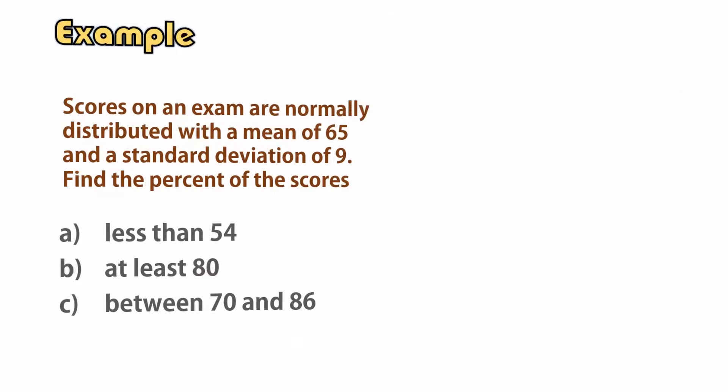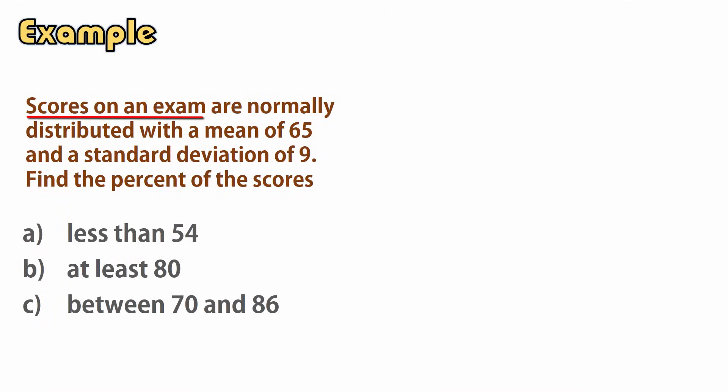Let's look at an example. Scores on an exam are normally distributed with a mean of 65 and a standard deviation of 9. We want to find the percent of scores satisfying a, b, and c here.